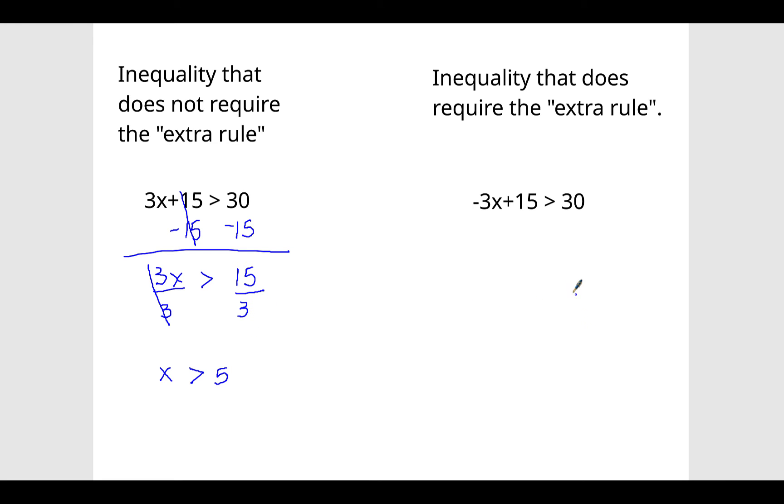So very similar problem, but now we have a negative. We have a negative 3 over here. So we're going to subtract 15 from both sides again. These cancel out or become 0. 30 minus 15 is 15.